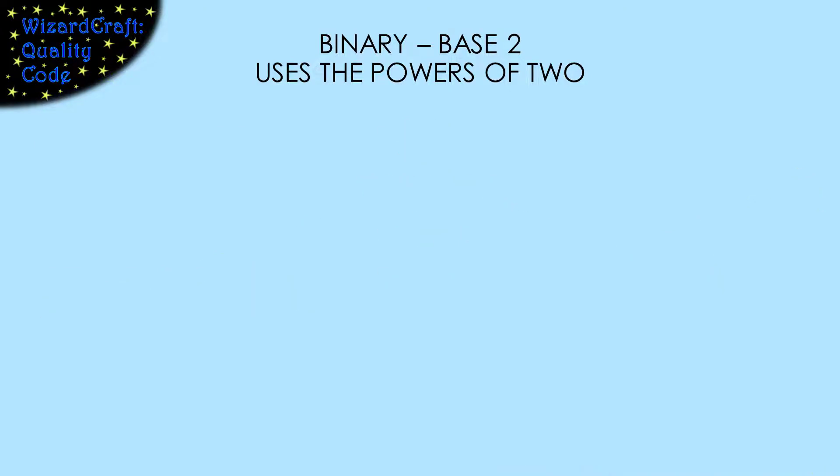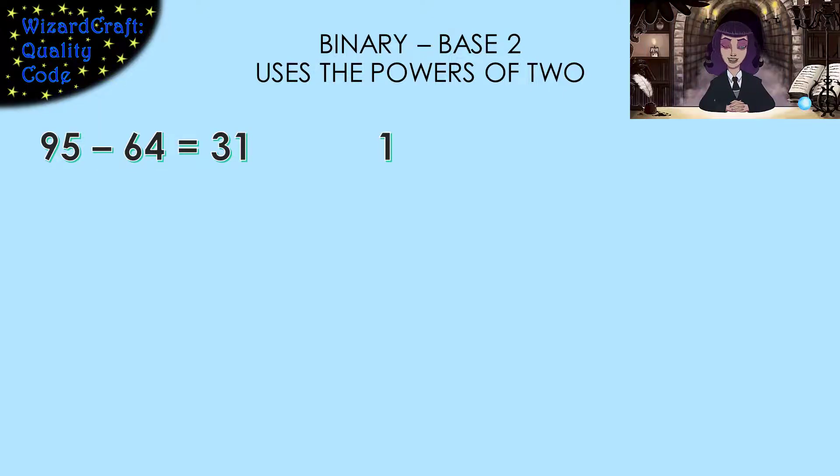Similarly, you can go the other direction. If you start with a decimal number and want to find the binary representation of that same value, we have to find the powers of 2 that sum to the value we want. The easiest way to do this is to start with our number. 95 is our example. The biggest power of 2 that is less than 95 is 64. You should definitely know the powers of 2: 1, 2, 4, 8,